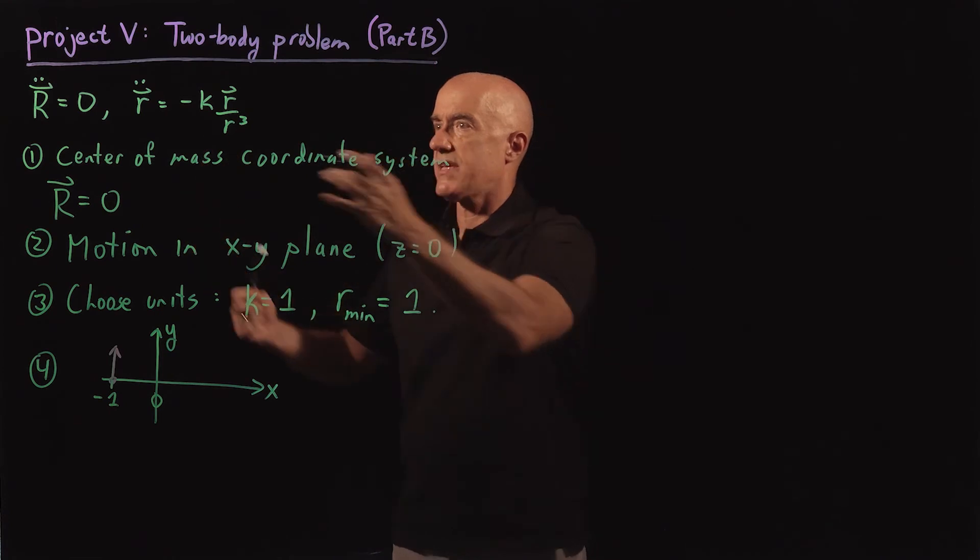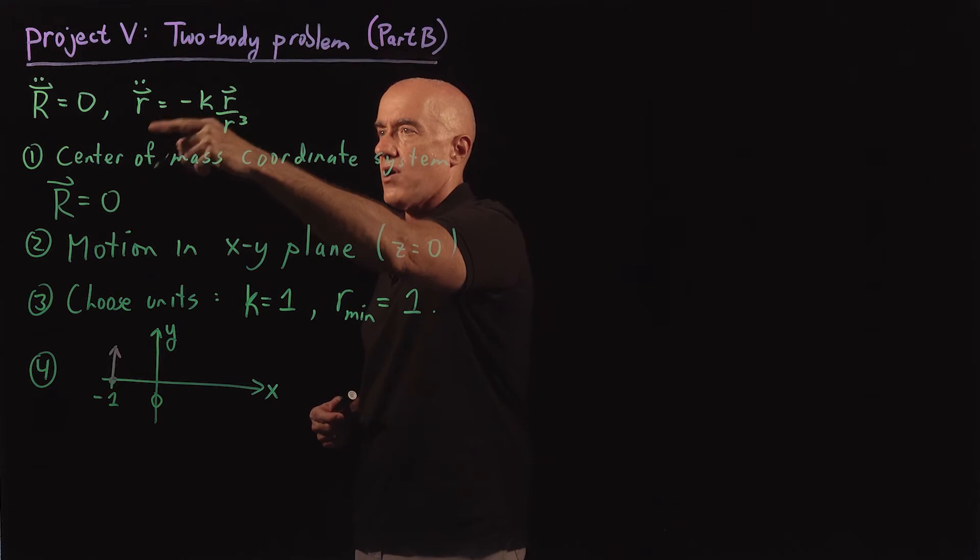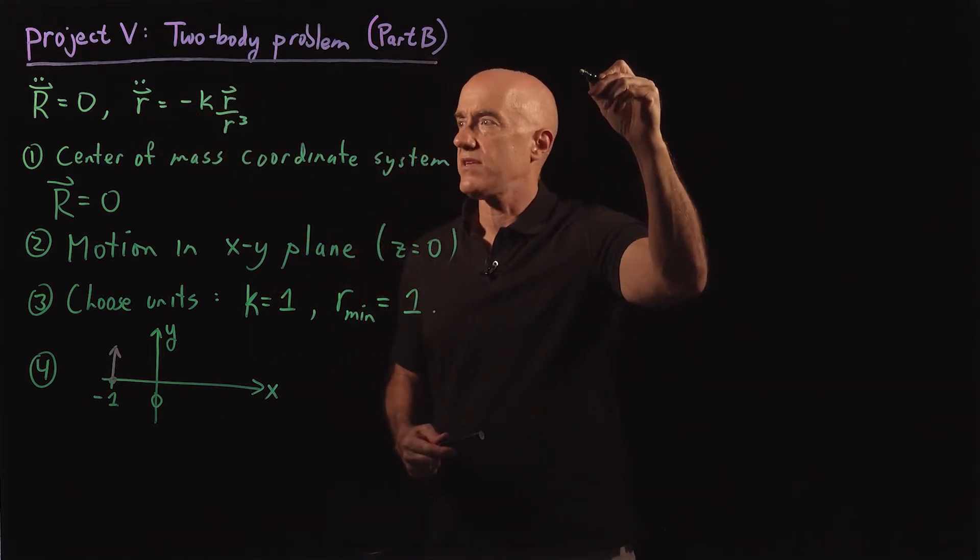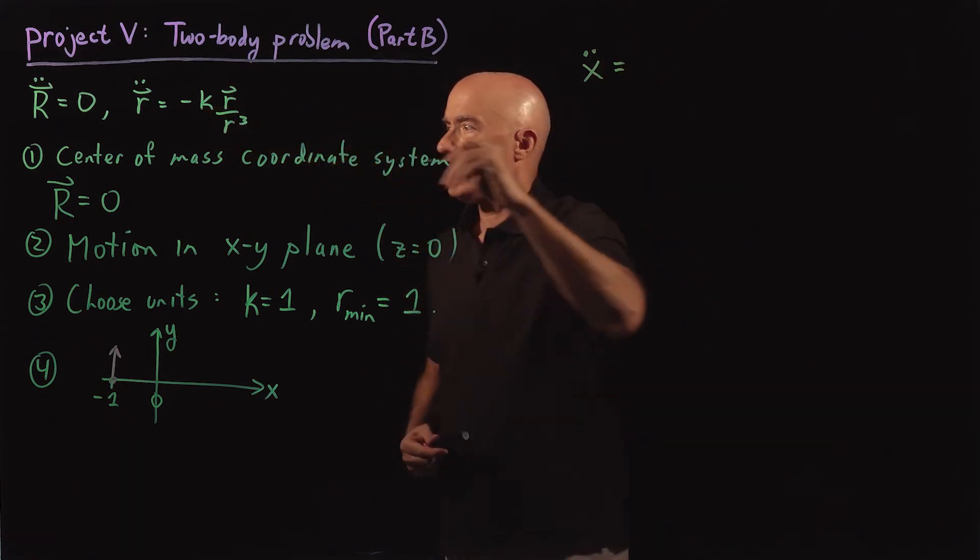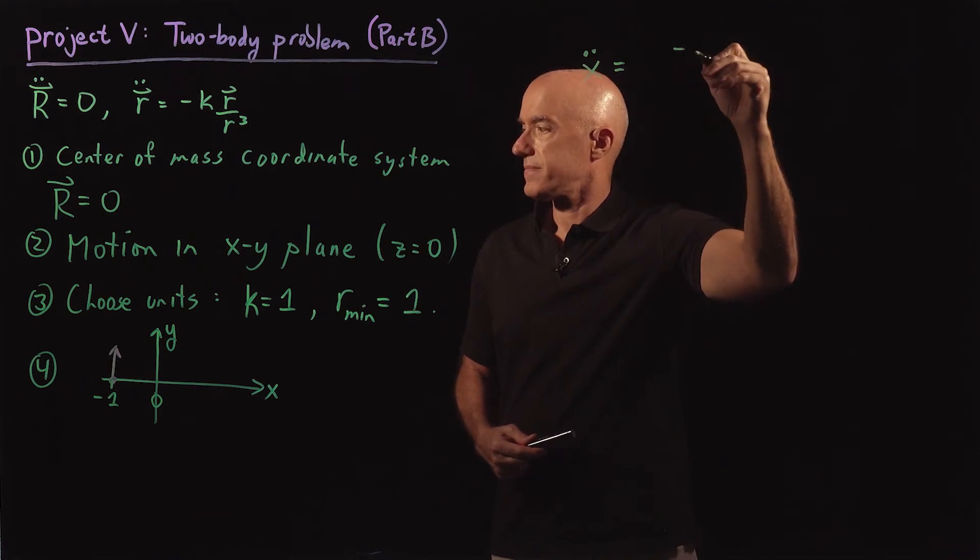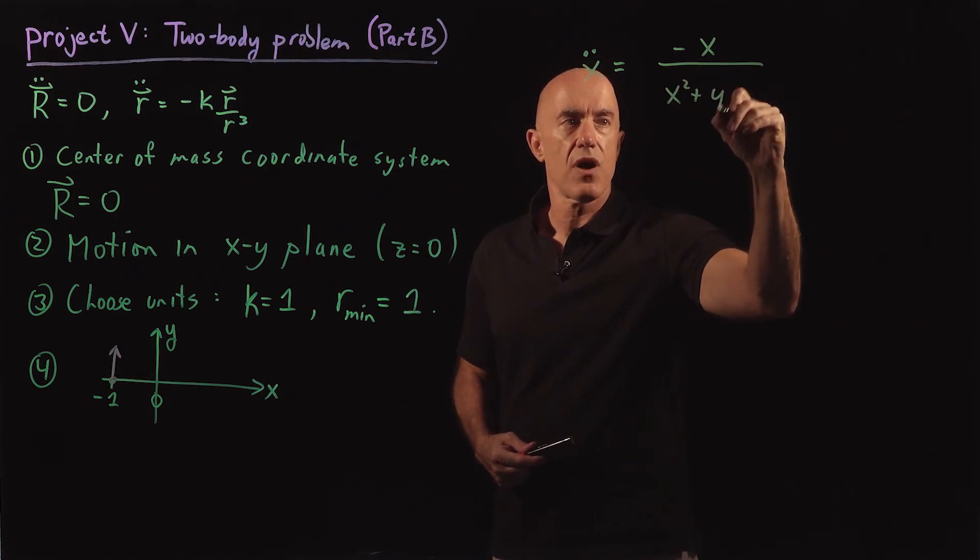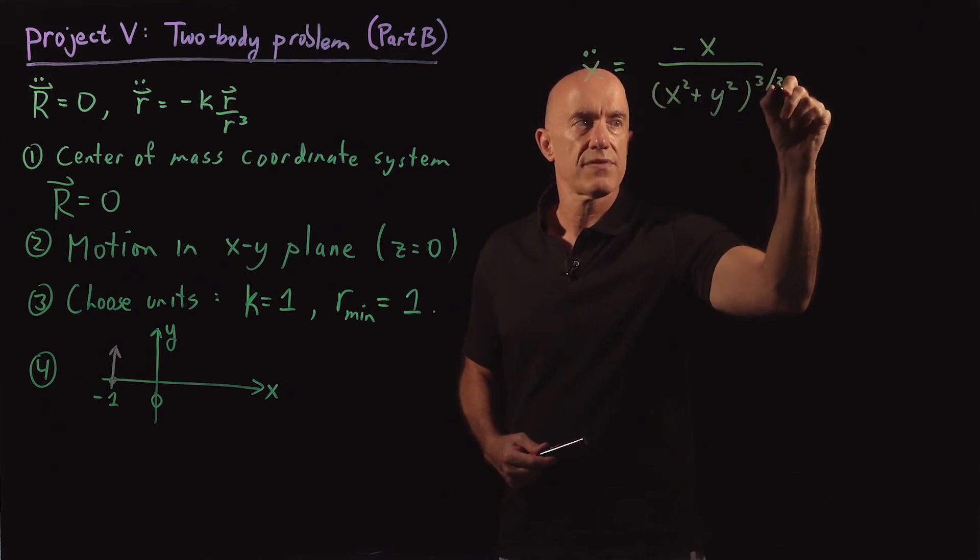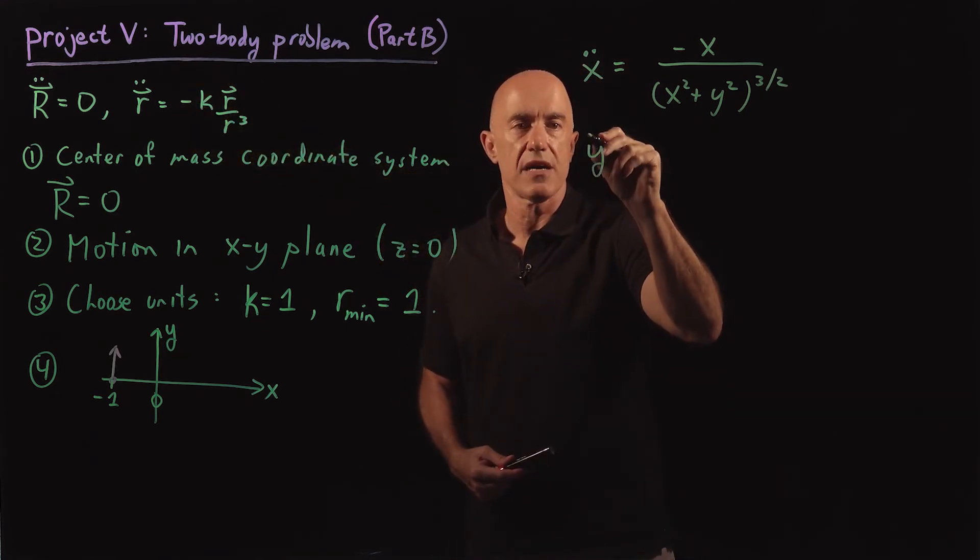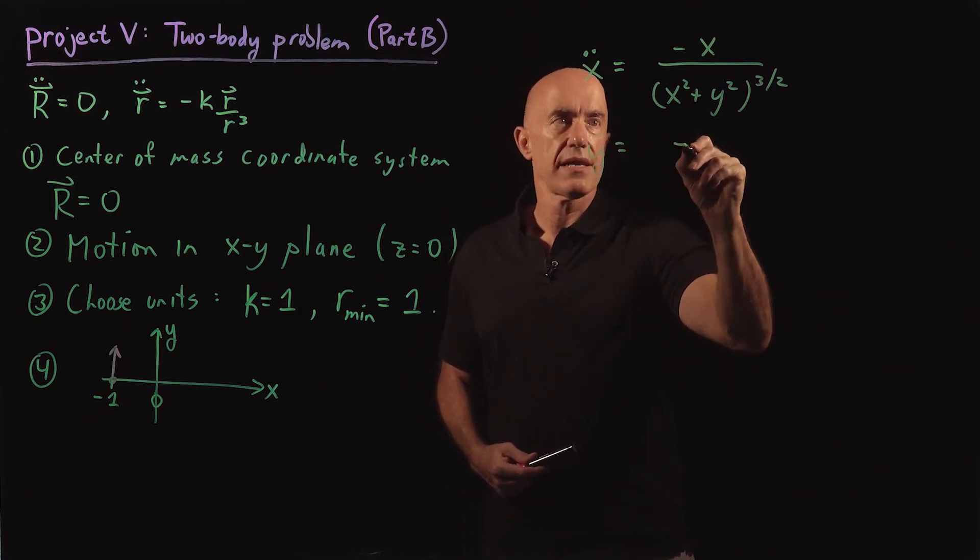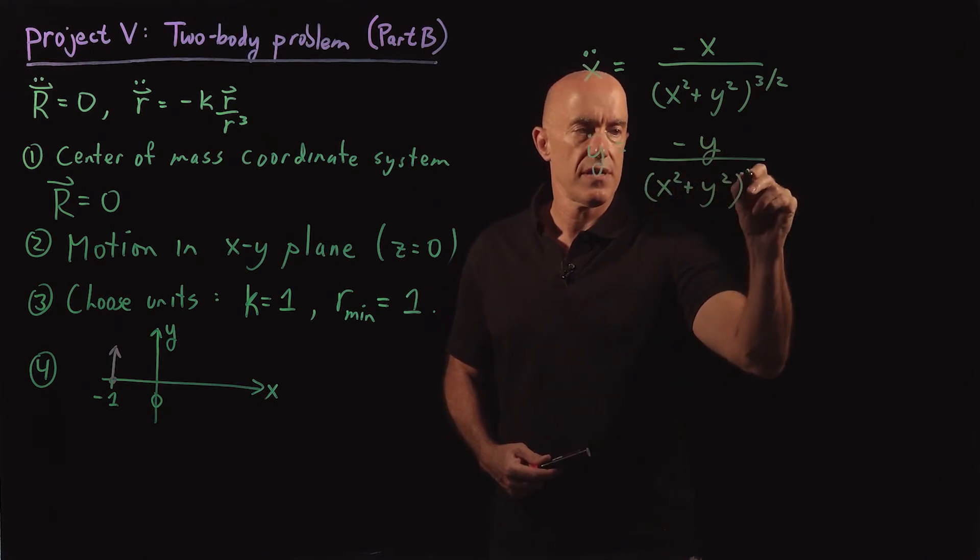So when we do that, then finally we get our differential equation. This is a differential equation for x and y. The final differential equation will be x double dot equals k will be one. So it will be minus x over r cubed, which is x squared plus y squared to the three halves. The x component, the y component then would be y double dot equals minus y over x squared plus y squared to the three halves.